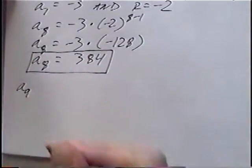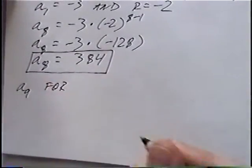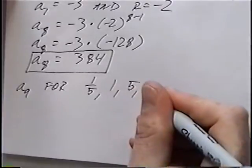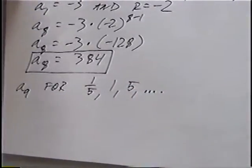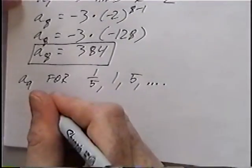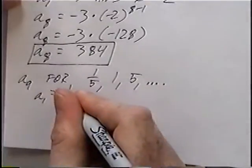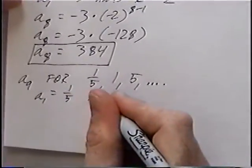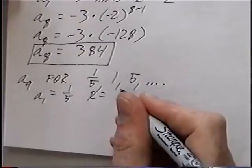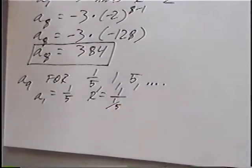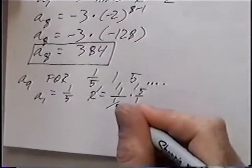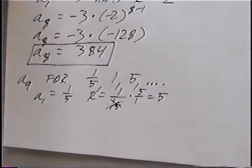The last problem for this section: find a sub n for the sequence 1/5, 1, 5, dot dot dot. A sub 1, the first term, is 1/5. To find r, take the second number divided by the first: 1 divided by 1/5. Instead of dividing by 1/5, we multiply by the reciprocal, so r equals 5.